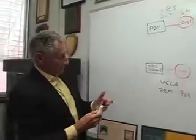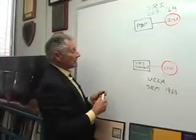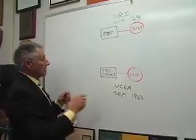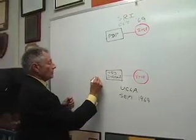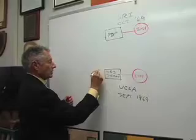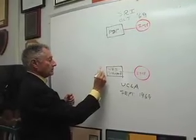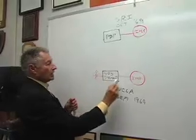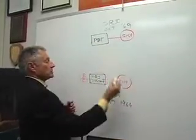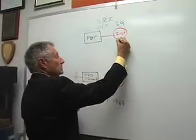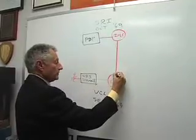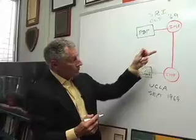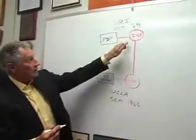We decided that we would log on from our machine to their machine. The idea was we'd sit down as if we were a local user and log on through the network to that machine. Of course, we needed a communications link. And so the first piece of the backbone network ever on the internet was that line from UCLA to SRI.